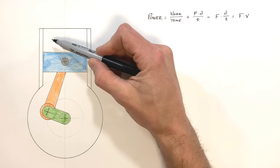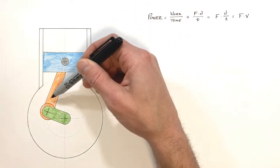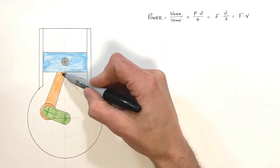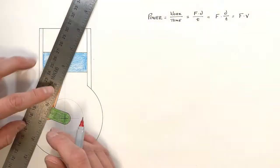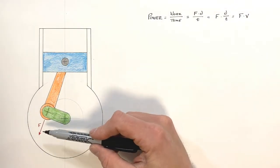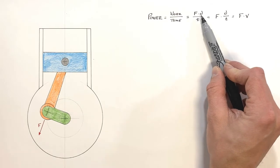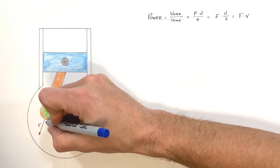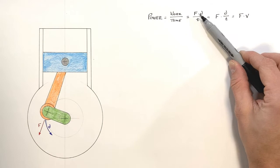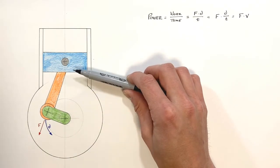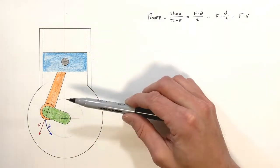In an internal combustion engine, we put an air-fuel mixture in and ignite it. That pushes the piston down, which pushes the connecting rod, which forces the crank to rotate. The connecting rod pushes on the crank — there's a force by the connecting rod on the crank. As the piston moves downward, this force acts over a displacement — an arc — doing work. And if this happens in any amount of time, we've got power: force, displacement, and time gives us power.